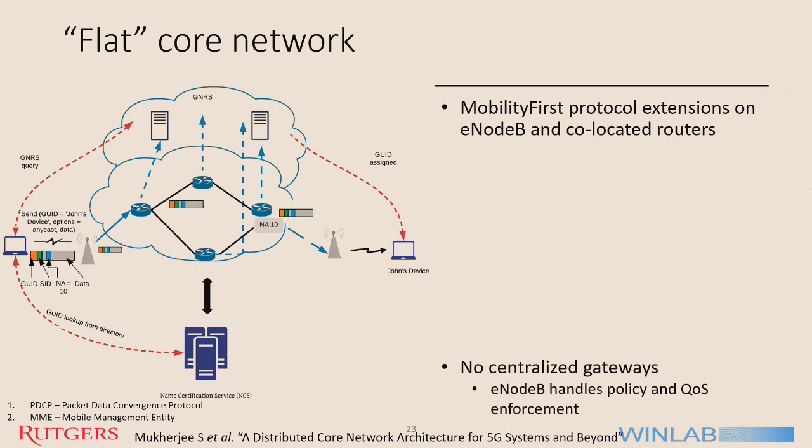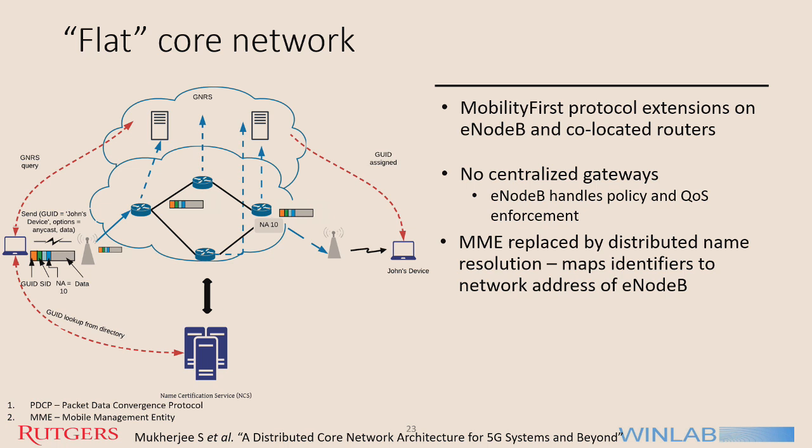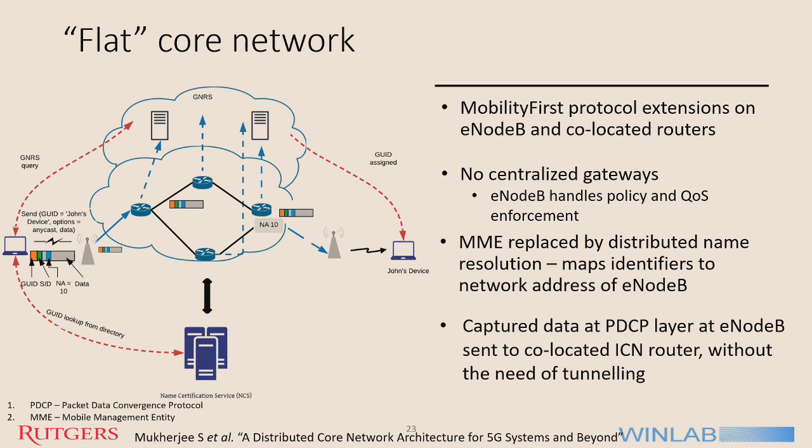When a data packet arrives at the eNodeB, it is sent to the ICN router. The ICN router queries GNRS for the GUID of the content or device and routes the packet accordingly. Data captured at the PDCP layer at eNodeB is sent to the co-located ICN router without the need for tunneling — this is all flat core network.